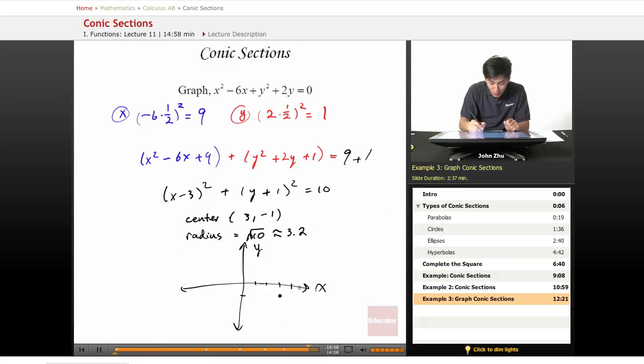So if we draw out 3.2 units away from the center in all directions, we go 1, 2, 3.2 is about there, 1, 2, 3.2 is about there, and 1, 2, 3.2 is about there.